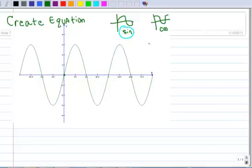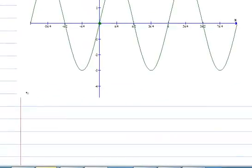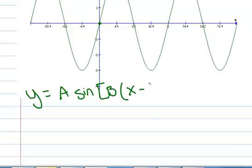All right, so then we know when we're all done, we're going to have the equation. The equation, let me write it down here, will be y equals a times sine of b times the quantity x minus c plus d. So that's the form that it's going to take.